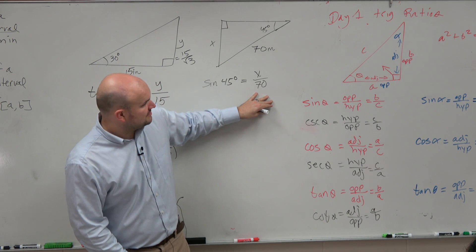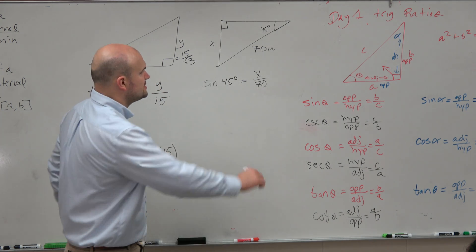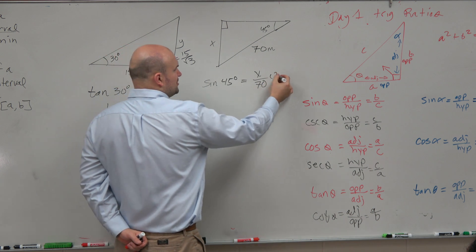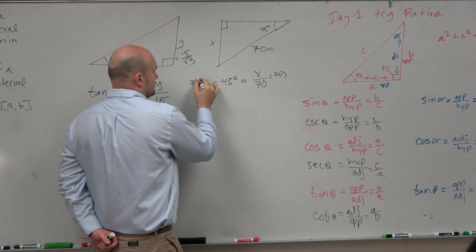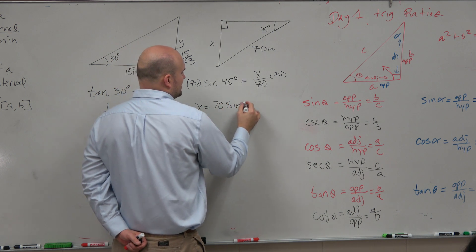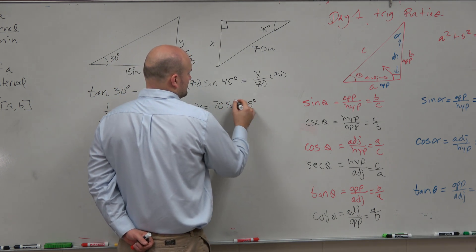In this example, guys, wouldn't you guys agree to solve for x, all I got to do is multiply by 70 on both sides. So I could say x equals 70 times the sine of 45 degrees.